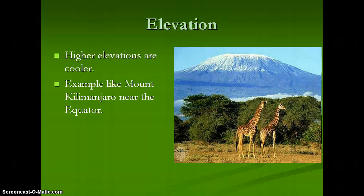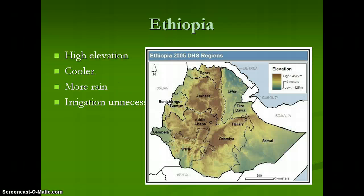Higher elevations are cooler. This picture shows that — this is Mount Kilimanjaro in the background, and it does snow year round even though there's savanna close to the bottom of it. Ethiopia is cooler because it's higher in elevation, and it gets more rain due to the rain shadow effect, because moisture cannot be held in the clouds when it goes over a higher area. That means irrigation is relatively unnecessary in most cases.